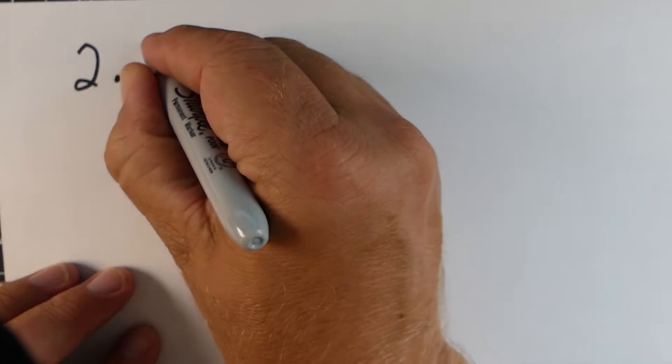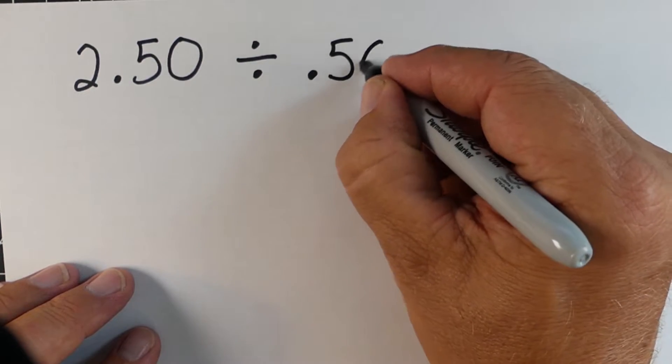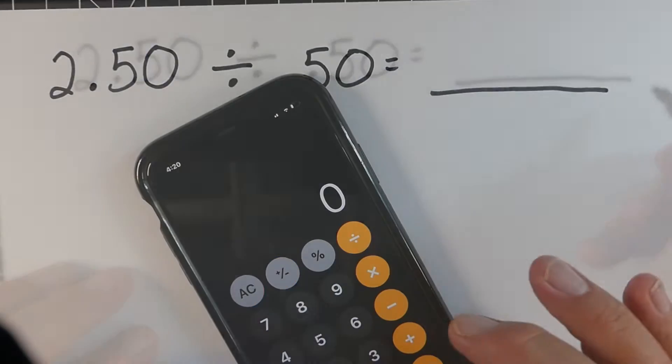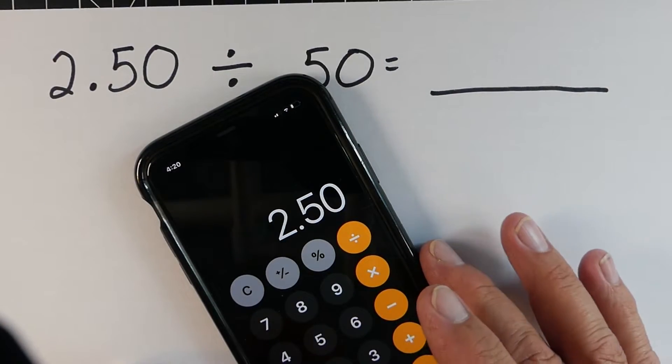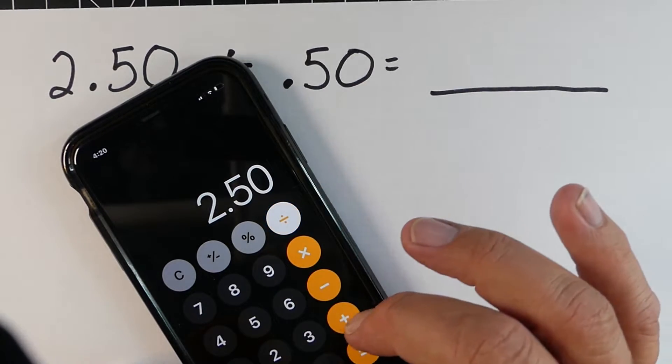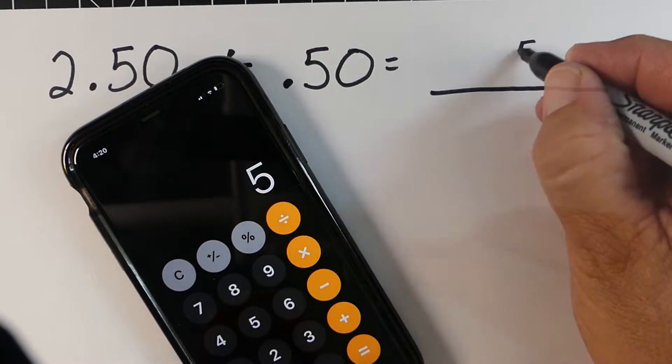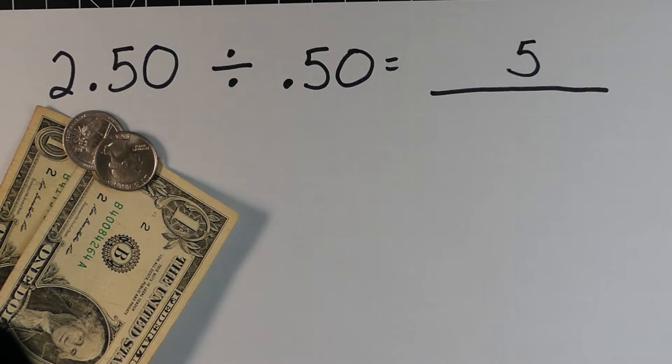So here's another example. So let's say we're taking 2.5 or 2.50 and we're dividing it by 0.5 or 0.50. So if I do that on the calculator, if I take 2.5 and I divide it by 0.5, I end up getting 5. So I started with 2.5, I ended up with 5.